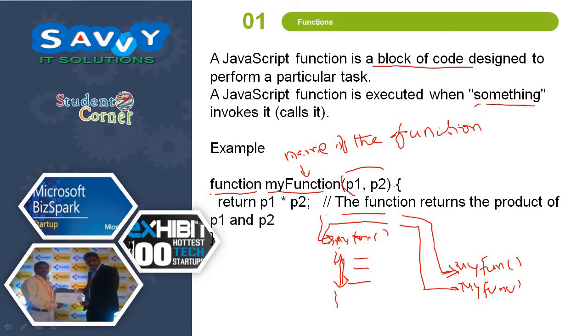Here p1 and p2 are the arguments passed to the function. Here this return statement returns the value that is product of p1 and p2 in this example.